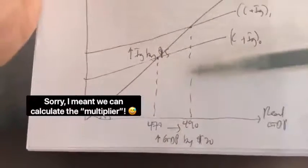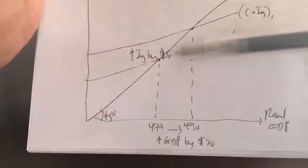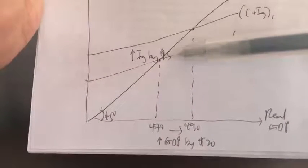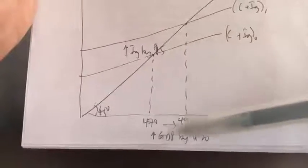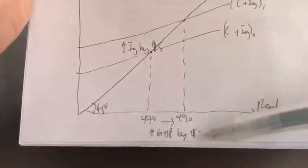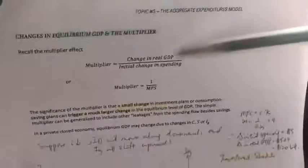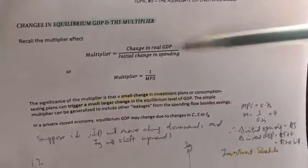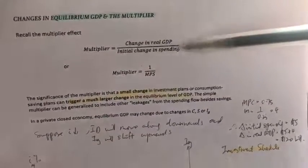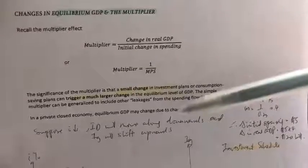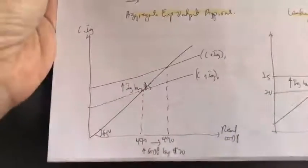How? See here, this is the initial change in spending, okay, which is $5 billion. This is our change in real GDP, $20 billion. So, using this formula, it's basically 20 over 5. So, our multiplier is actually 4 in this example.